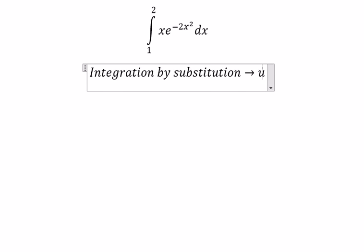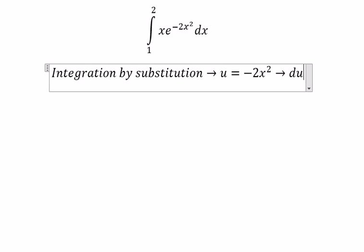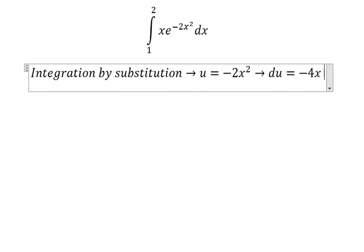So we put u equal to negative 2x squared. Then du equal to negative 4x dx.